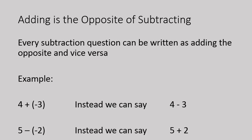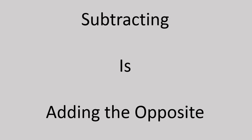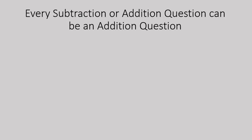We do the same thing when we have five minus negative two. Instead we can say five plus two. It's the opposite operation, addition in place of subtraction, and it's the opposite sign, positive two in place of negative two. So subtracting is adding the opposite.